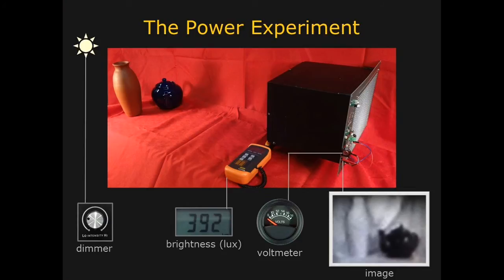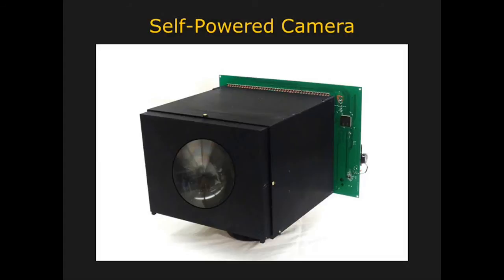The image sensor continuously toggles between image capture and power harvesting modes. When the camera is not used to capture images, it can be used to generate power for other devices, such as a phone or a watch.